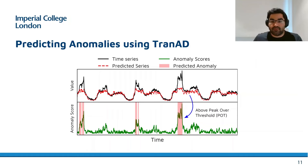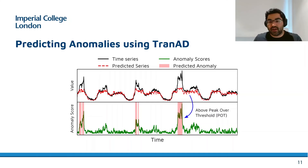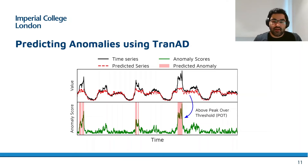For each dimension of the multivariate time series data, an example is shown here in black. We generate a reconstruction shown in red, and the deviations between the ground truth and the reconstructed values are shown in green as anomaly scores. We utilize a dynamic thresholding technique to set a threshold at each time step, above which we label the time step as anomalous.